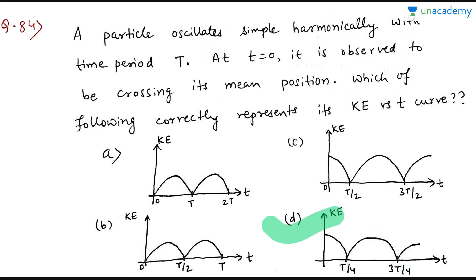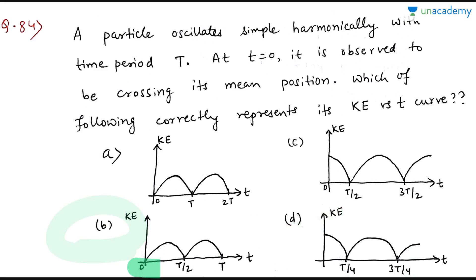If it were a potential energy vs. time graph, PE would be zero at t = 0 (since particle is at mean position), and option B would be the answer. Notice that KE and PE repeat every T/2 — their time period is half of the displacement's time period. So the frequency of KE and PE is double the frequency of SHM. If SHM frequency is F, then KE and PE frequency is 2F. This is also a question that can be asked in NEET.